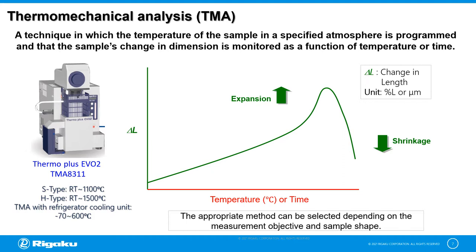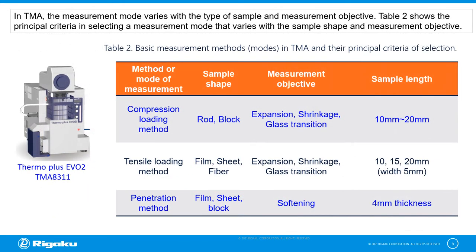With our TMA system, you can measure from room temperature up to 1500 degrees centigrade. In TMA, the measurement mode varies with the type of sample and measurement objective, and the criteria for selecting a measurement mode are shown in this table. The compression loading method is used to measure rod type or block type samples for the detection of expansion, shrinkage, and glass transition of a material ranging from 10 mm to 20 mm in length. In this webinar, we will show you how to measure a sample with a length of less than 10 mm.